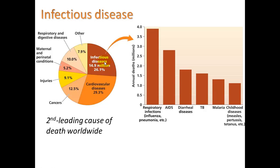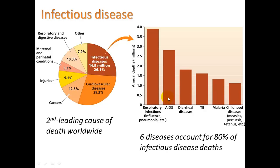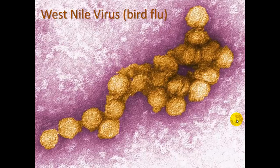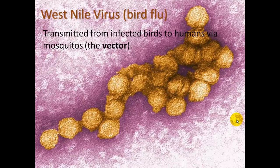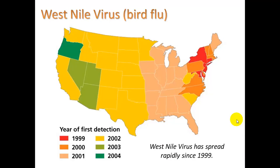About a quarter of deaths are due to infectious diseases, the second leading cause of death worldwide. Six diseases account for 80% of infectious disease deaths: the flu, AIDS caused by HIV, diarrheal diseases like Ebola, tuberculosis, malaria carried by mosquitoes, and measles and pertussis. The West Nile virus emerged about 20 years ago — also called the bird flu — transmitted from infected birds to humans via mosquitoes. It was first detected in the US in 1999 in the northeast and took about five years to spread westward.